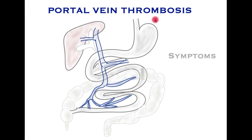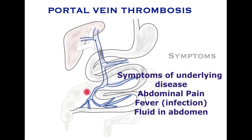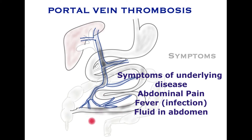So how does the portal vein thrombus arise and what consequence does it have? Normally, the portal circulation flows towards the liver. However, a clot may form within the portal vein — this is called a thrombus, and the process is called thrombosis. This clot initially may not cause a complete occlusion of the portal vein, allowing blood to pass into the liver, and the patient may not demonstrate many symptoms. However, as the clot progresses and causes complete occlusion, blood stops flowing towards the liver and pressure builds up towards the bowel — mainly the small bowel — causing it to become very engorged and distended, as well as fluid leaking out into the abdomen.